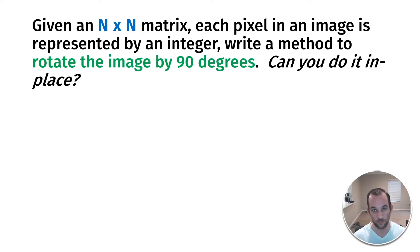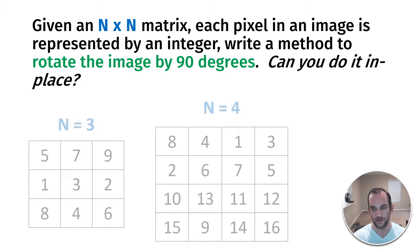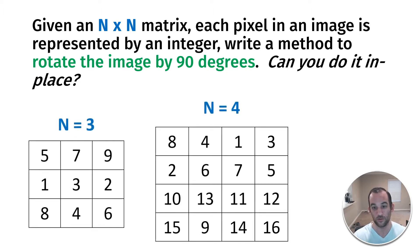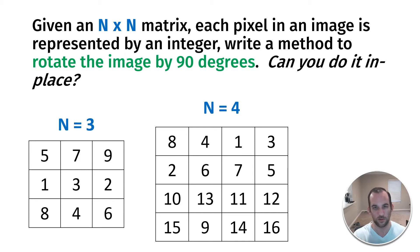The first thing we should do is understand the question and look at some inputs to see how it works. If N equals 3, this is a 3×3 matrix; if N equals 4, a 4×4 matrix; if N equals 10, a 10×10 matrix. For our examples, we're just using random integers for all the cells, and this is represented as a 2D array.